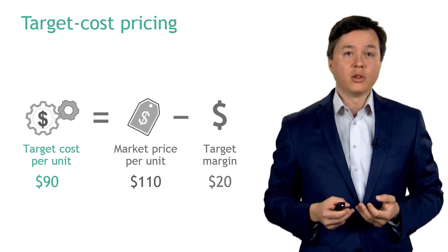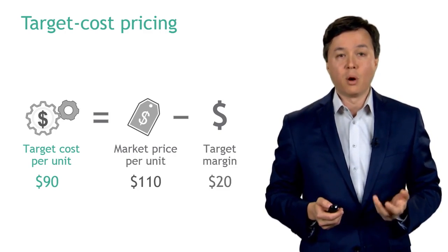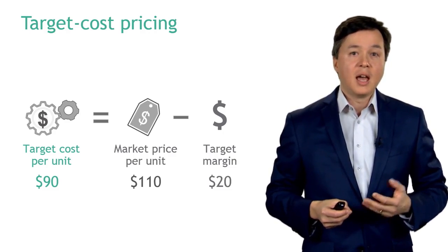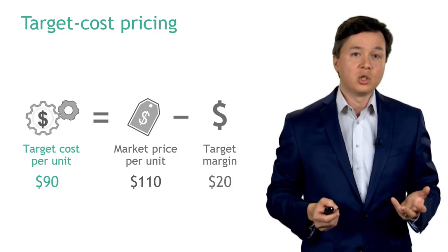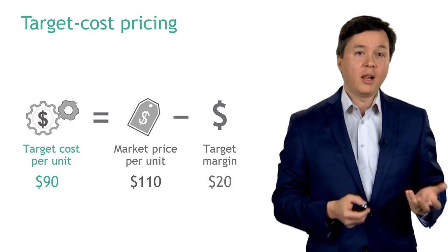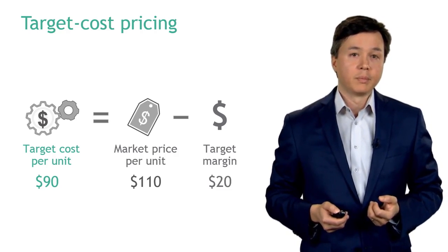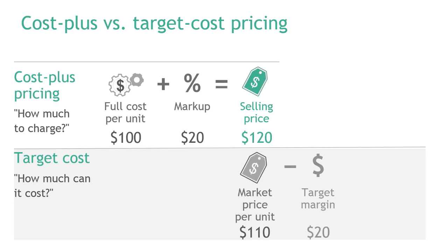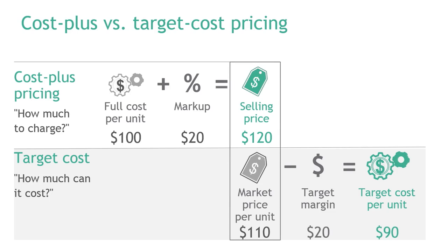There is a related construct called target cost pricing which addresses one of the downfalls of cost plus pricing. In target cost pricing, you start with the market price and subtract your target margin. For example, if research shows the price you should sell at is $110, and you still want to make a $20 margin, this tells you the cost should be $90 for your item. Comparing this to cost plus: in cost plus you start with your cost and solve for the selling price. In target cost pricing, you start with the market price, subtract your margin, and it tells you what your item should cost — in this case, you need to get your cost down by $10.